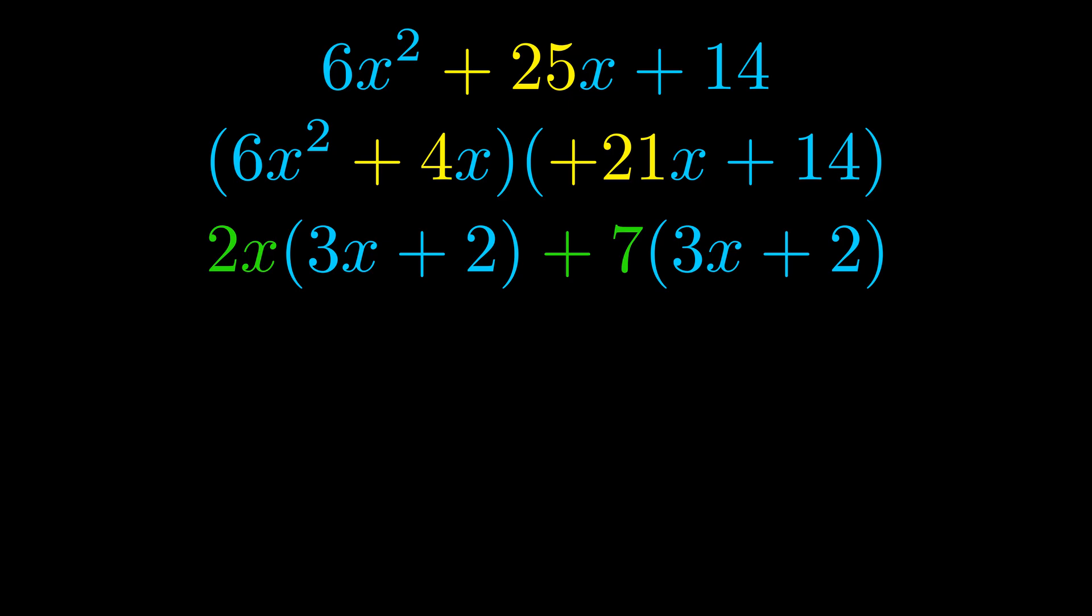Notice also how what remains inside of the parentheses is the same in both cases. The blue values are the same. Those blue values will become one of our factors and we will combine the two green values, the GCFs that we pulled out, to get the other one. And that is our fully factored equation.